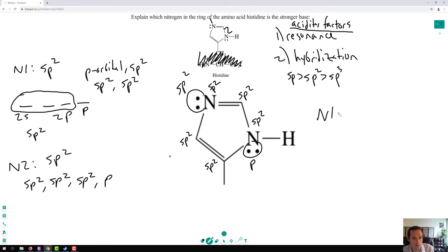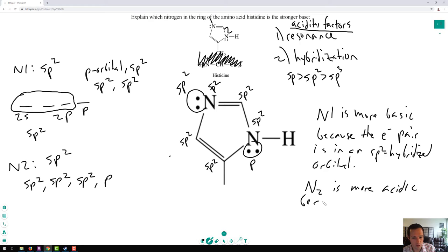So we've discovered that N1 is more basic because the electron pair is in an sp2 hybridized orbital. And N2 is more acidic because it is resonance stabilized. That concludes this problem on the acidity of the amino acid histidine, where we use resonance and hybridization to explain which one is the stronger base. I hope you learned something, and I'll see you soon. Thanks for watching.